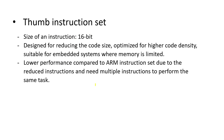Next, let's look at the Thumb instruction set. With the Thumb instruction set, the size of an instruction is 16-bit. It is designed for reducing code size, optimized for higher code density, and suitable for embedded systems where memory is limited. It has a lower performance compared to the ARM instruction set due to the reduced instruction size, and it needs multiple instructions to perform the same task.